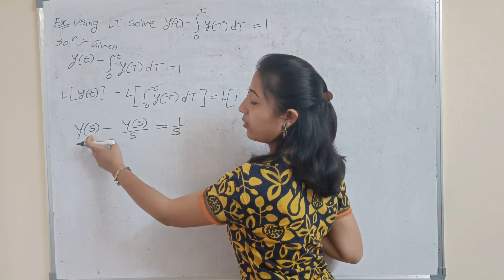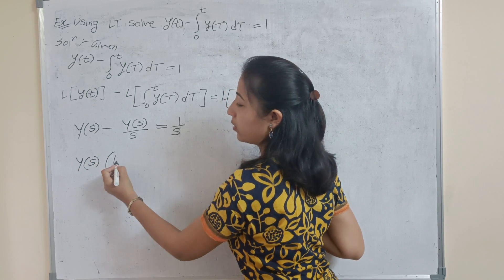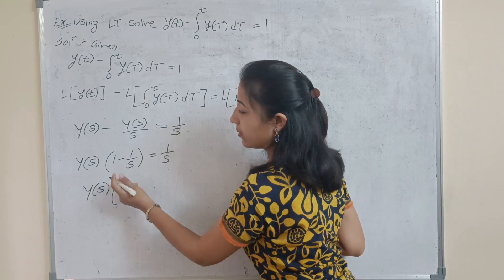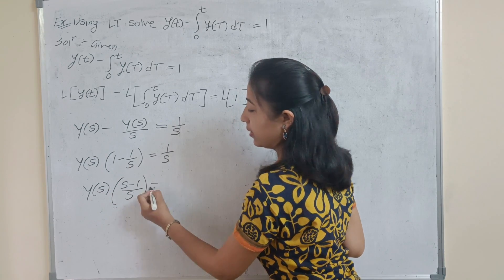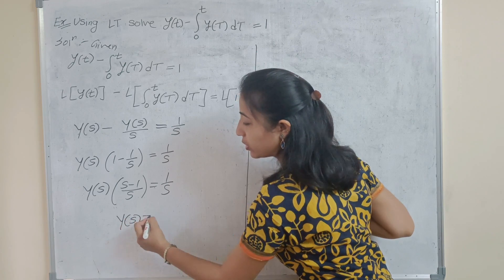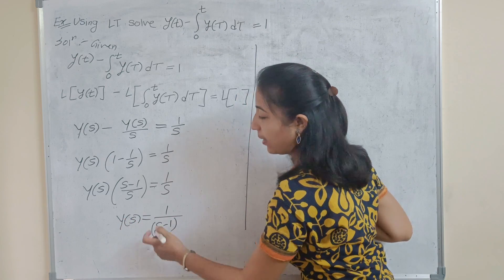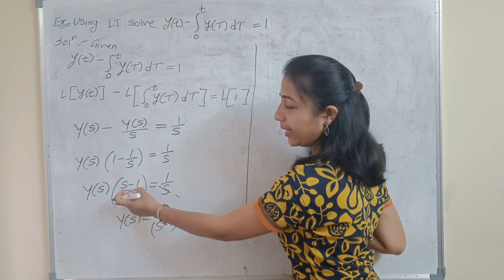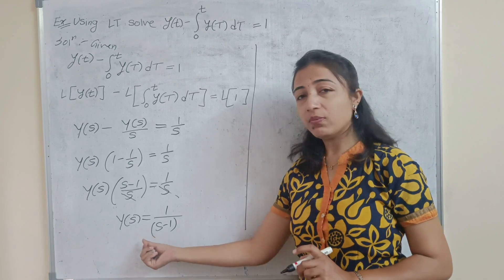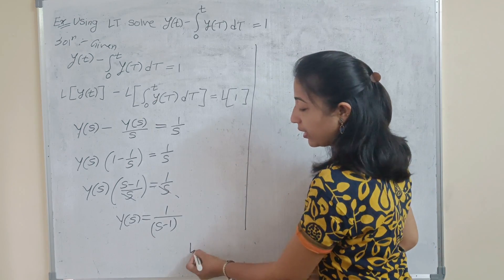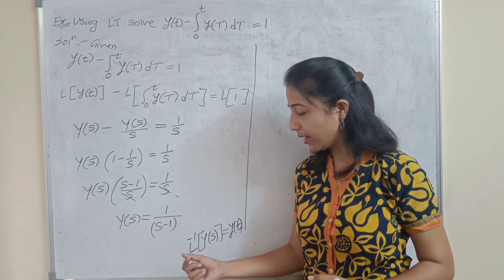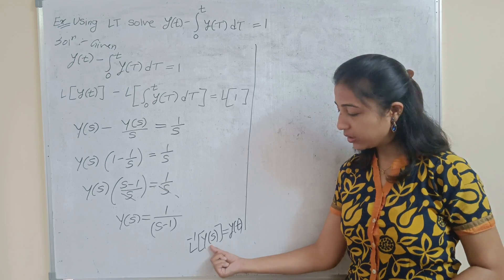Factoring out Y(s): Y(s)·(1 − 1/s) = 1/s. This gives Y(s)·(s − 1)/s = 1/s. The s cancels from both sides, so Y(s)·(s − 1) = 1. Shifting (s − 1) to divide the right side: Y(s) = 1/(s − 1). We now know Y(s) and need the inverse Laplace transform to get the solution y(t).